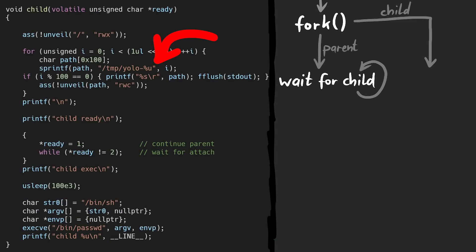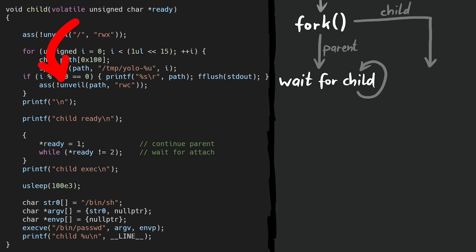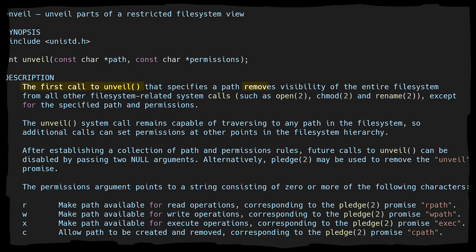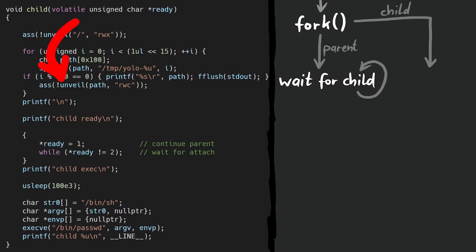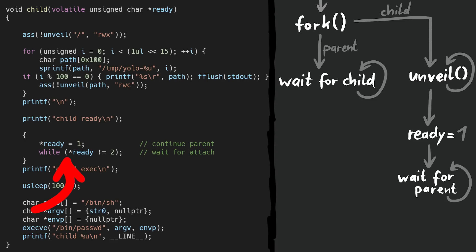The child creates a lot of strings in a loop — some path pointing to something in a temp folder. You can see this very well when you execute the exploit, because it prints the progress of those paths. For each path it calls unveil. The first call to unveil removes visibility of the entire file system from all other file system related system calls, such as open, chmod, and rename. Additional calls can set permissions at other points in the file system hierarchy. So this is like a defense-in-depth security feature — a process can basically block access to any files it shouldn't have access to. Now these temp files don't exist, but it doesn't matter; the kernel has to keep track of them. So when the child is ready, it writes 1 into the shared memory, and now the child waits for the parent with a while loop checking if the memory is 2.